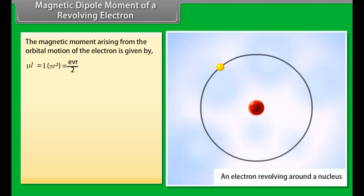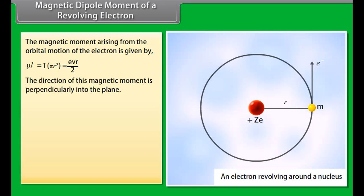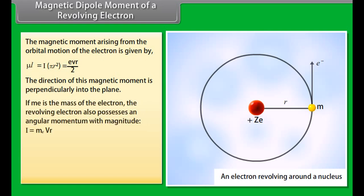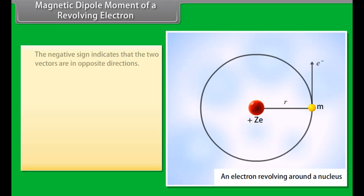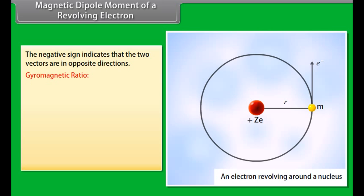Magnetic dipole moment of a revolving electron: The magnetic moment from the orbital motion of the electron is given by EVR/2. If M_E is the mass of the electron, the revolving electron possesses angular momentum of magnitude L = M_E VR. From these two equations, we get Mu_L = minus E upon 2M_E, multiplied by L. The negative sign indicates the two vectors are in opposite directions. The gyromagnetic ratio Mu_L upon L equals E upon 2M_E, with value 8.8 × 10¹⁰ coulomb per kilogram for an electron.